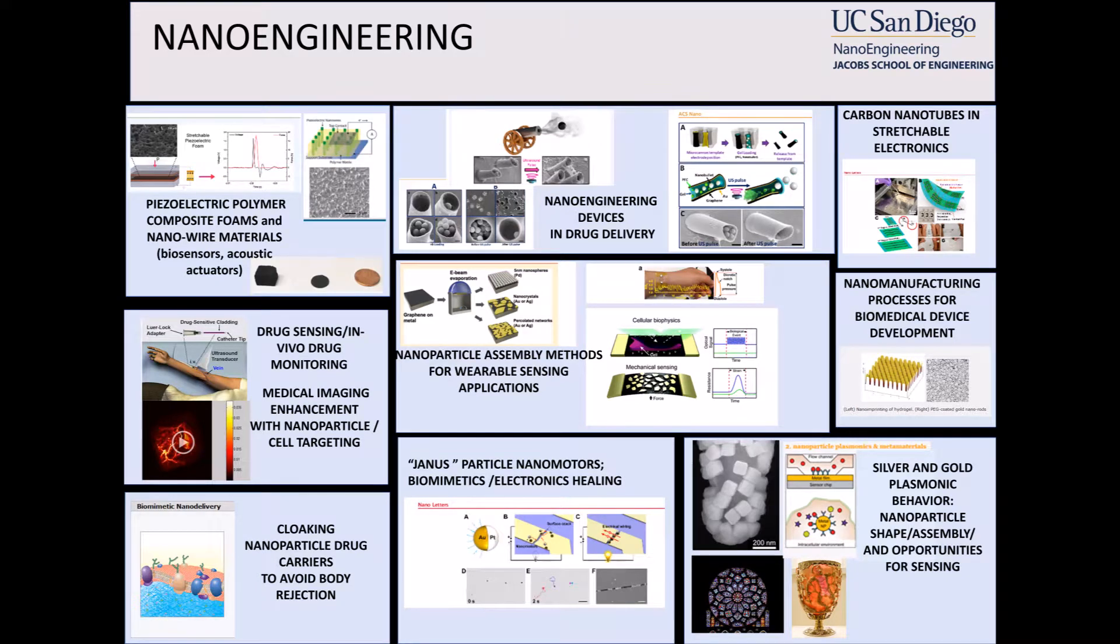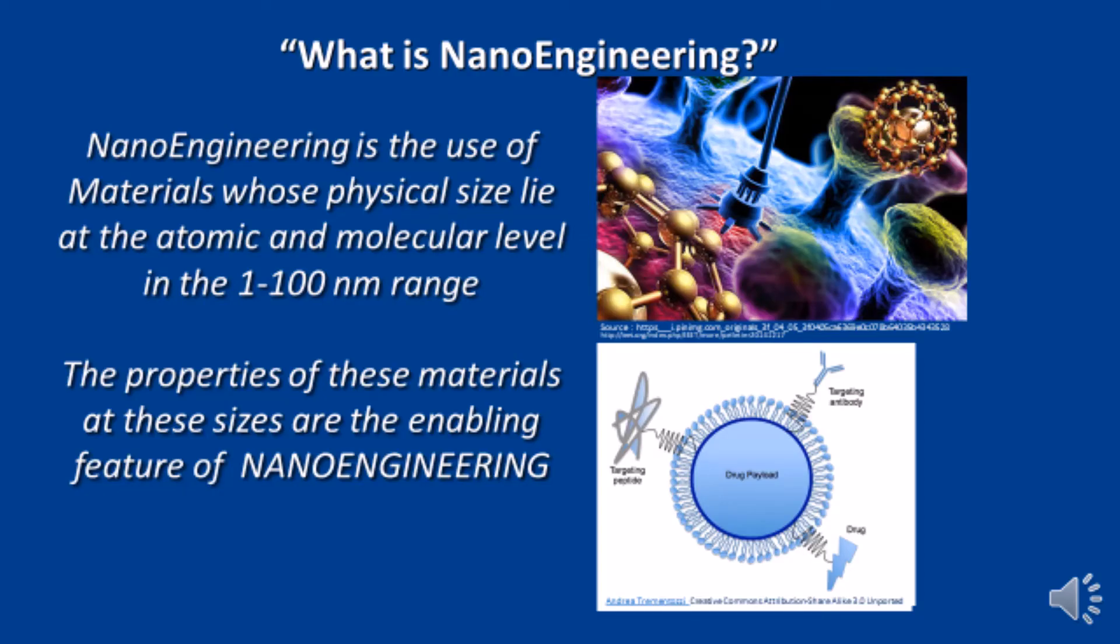What is nanoengineering? Nanoengineering is the use of materials whose physical size lie at the atomic and molecular level in the 1 to 100 nanometer range. The properties of these materials at these sizes are the enabling feature of nanoengineering.